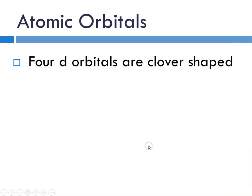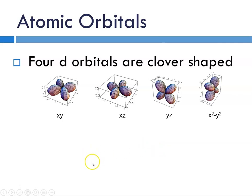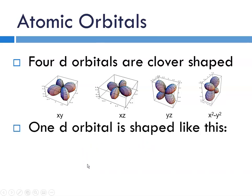And then if we talk about the D orbitals, four of them are cloverleaf shaped. Here's the XY, the XZ, the YZ, and the X squared minus Y squared. The fifth D orbital has a funny shape, they call it a dumbbell with a doughnut, and that is the Z squared orbital. These are showing you the probability of finding the electron in space. These are the so-called fuzzy clouds.